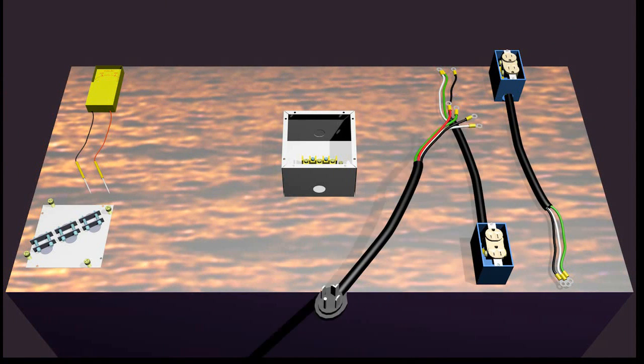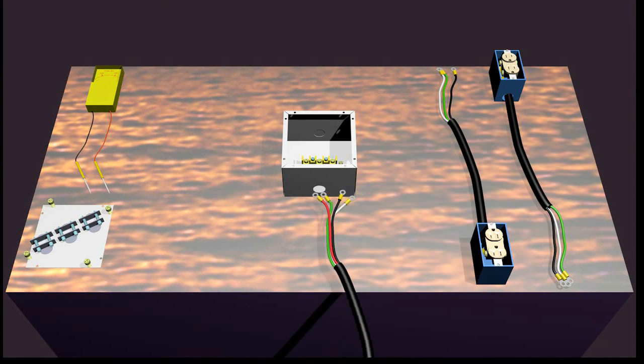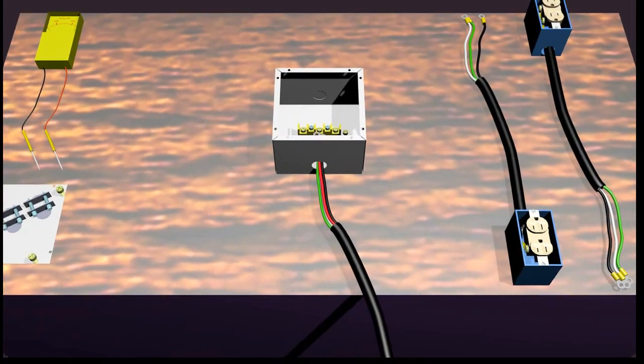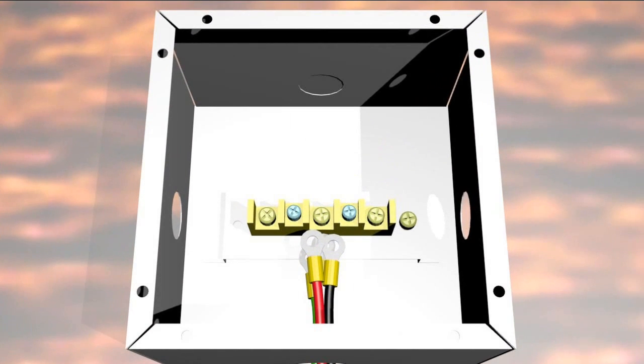If you have ever purchased a new electrical appliance, you will know that they do not include power cords. This is because 220 volt outlet configurations vary. Determine which outlet you have, get a matching cord.